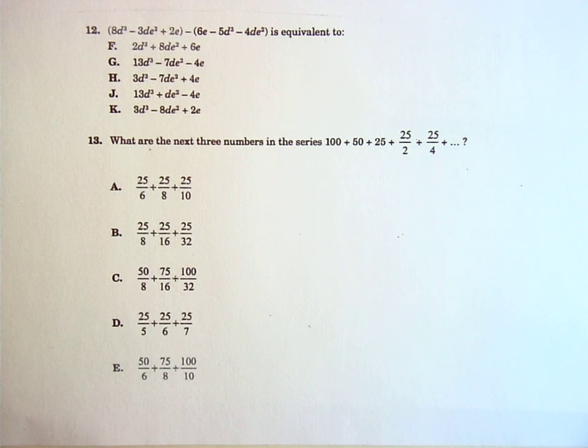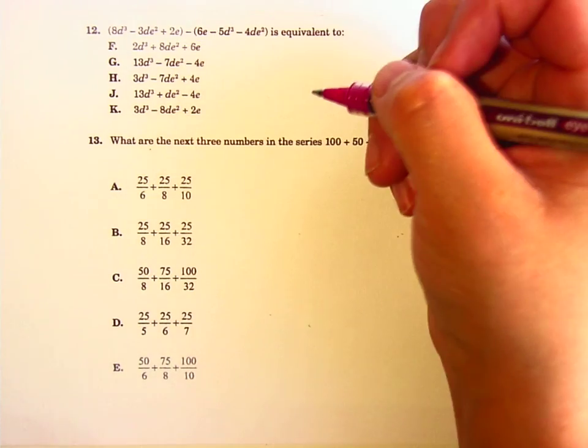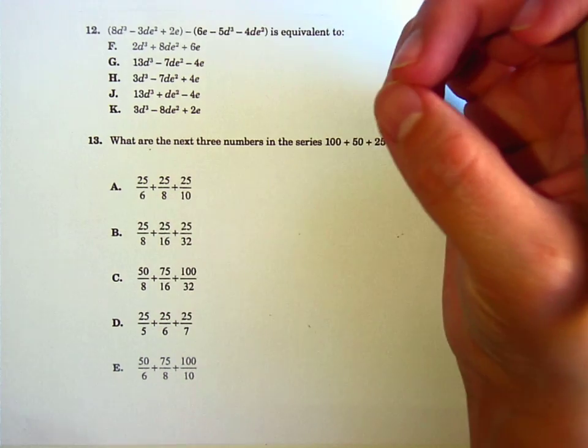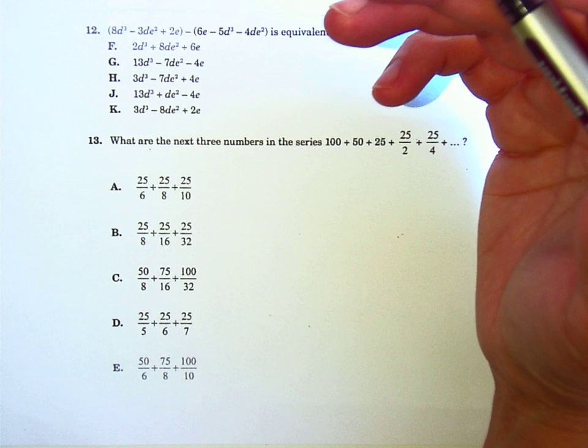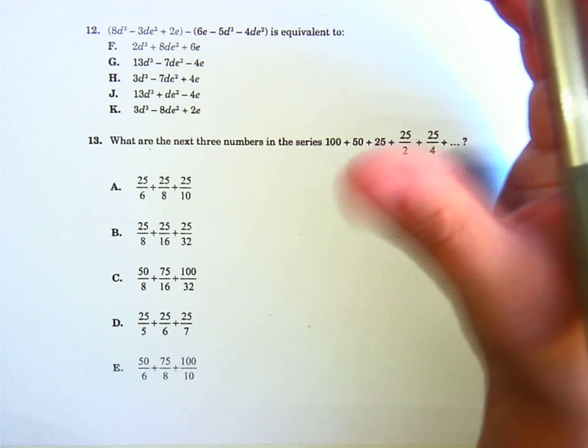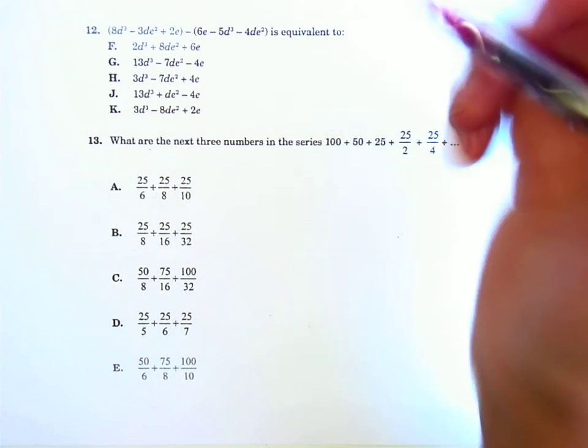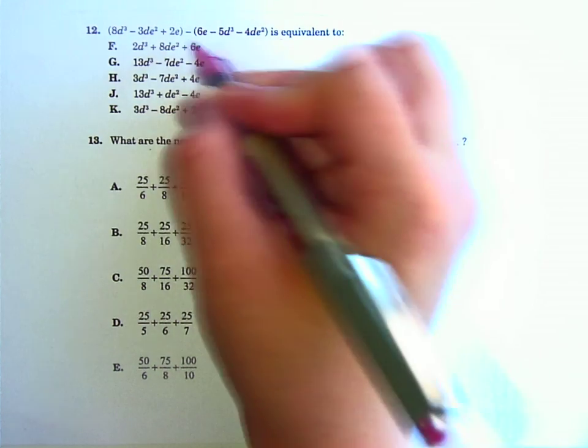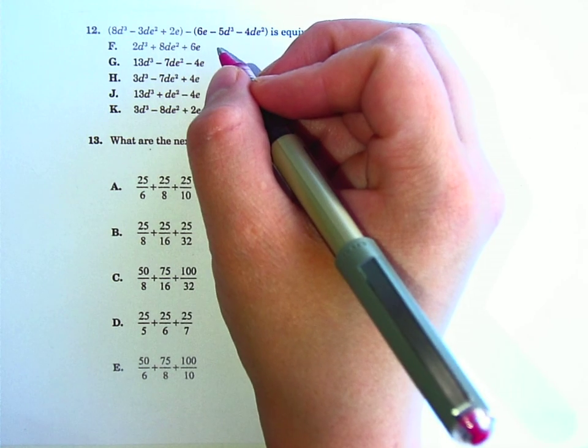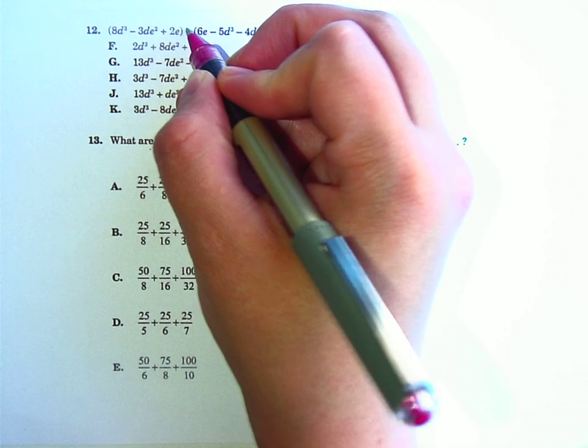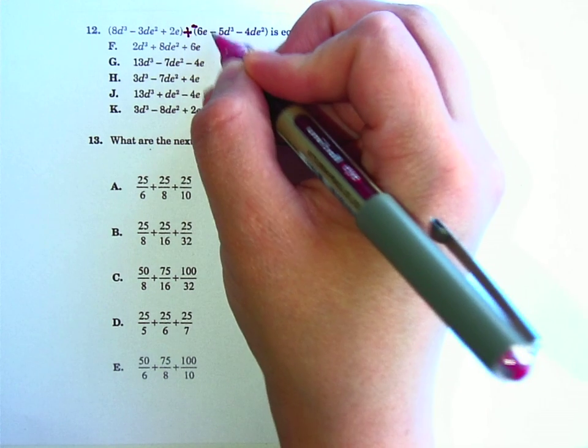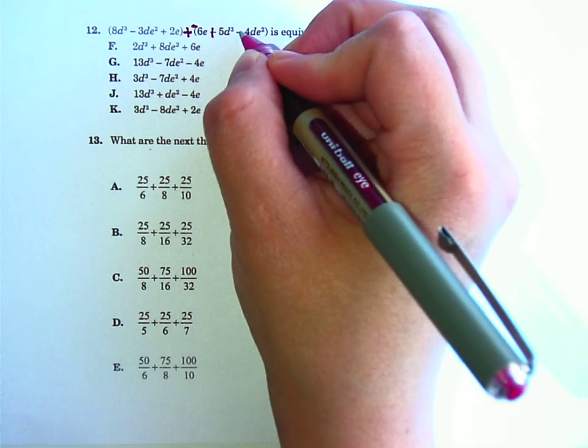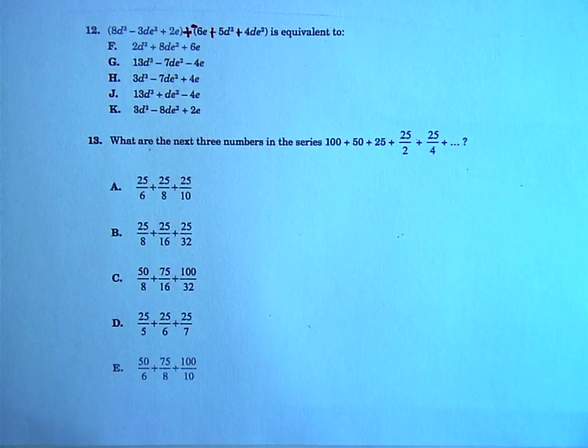Number 12 is talking about adding like terms. Like terms in algebra is if you have, like, something 3C that only can be added to other things that have C, but only C. The letters, the variables have to match exactly. Also, you see this minus sign? It means we're subtracting all of these things. So, right now, I'm going to do that fun little trick you learned in Mrs. Sickink's class where you add the opposite. So, I'm going to put a plus sign here, and then make all of these negatives. So, that's a negative 6E. A negative negative makes a positive 5D³, and another positive 4DE².